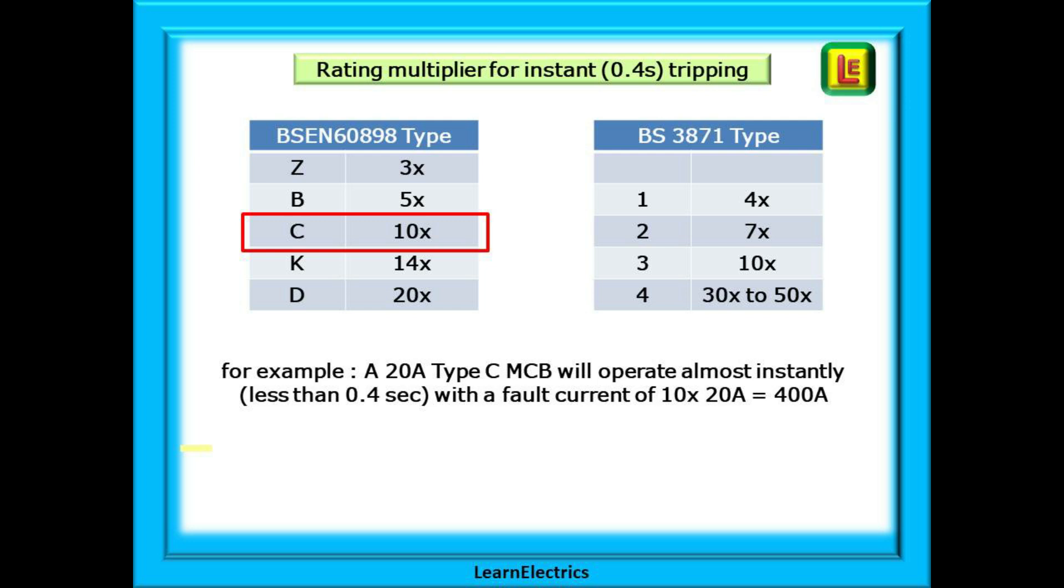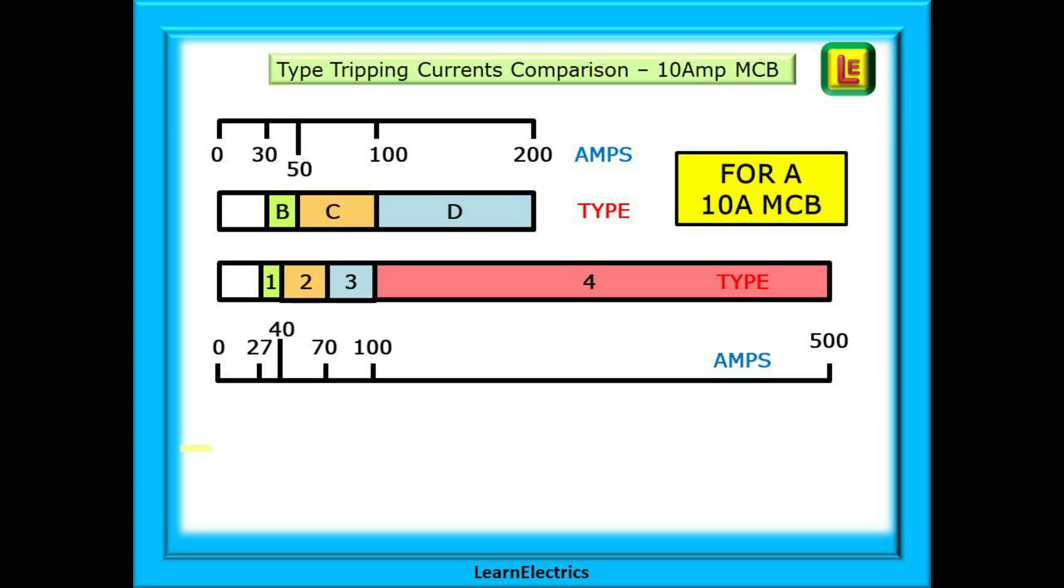For our example, a 20 amp type C MCB will operate almost instantly, that is to say in less than 0.4 seconds with a short or fault current of 10 times 20 amps which is 400 amps. This chart compares the tripping current of the 60898 types B, C and D with the tripping current of the 3871 types 1, 2, 3 and 4 and in this example we will use a 10 amp MCB for comparisons.